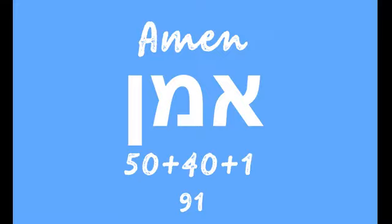Aleph always implies or hints at the unity, or the creator of the universe — this is why it's 1, the first letter. Mem stands for 40, the appearance in time, and Nun, also 50, means in this life. So we have 1 plus 40 plus 50.